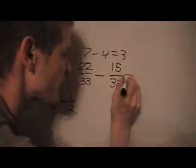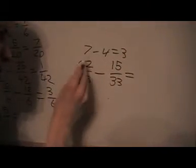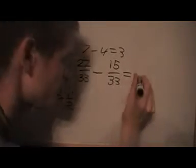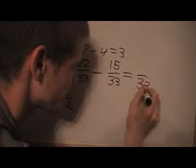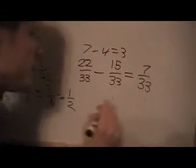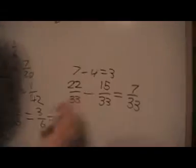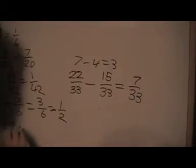So that's going to be 15. And I'm going to get, I've got 22 minus 15, and that's going to be 7/33. And that's 3, so I write the 3 in front and then I put my fraction here.